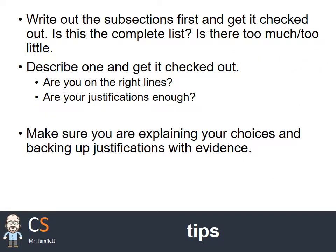A few tips: write subsection headings out first and get them checked — is this the complete list, too many, too little? A quick check with your teacher will save you time and make sure you've covered every part. Then describe one feature and get it checked. Pick your most complex feature first — are you on the right lines? Are your justifications enough? Have you written it well? Get feedback early so you can crack on and do the rest. Make sure you're explaining your choices and backing up justifications with as much evidence and references as you can.